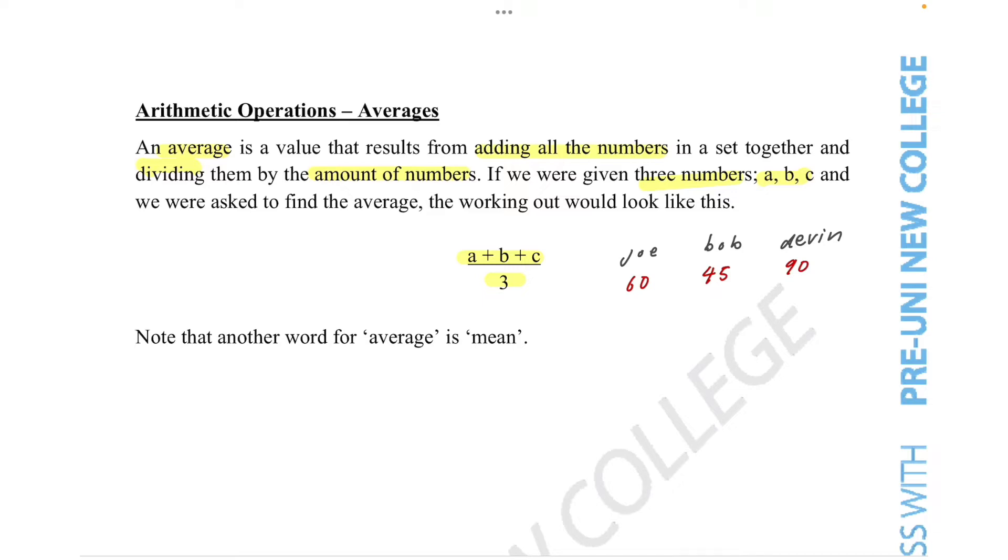Firstly, we have to add all the results up. So 6 plus 4 is 10, and 10 plus 9 is 19. So the total would be 195. And now we know we have three results from Joe, Bob, and Devin. So we just simply divide by 3.